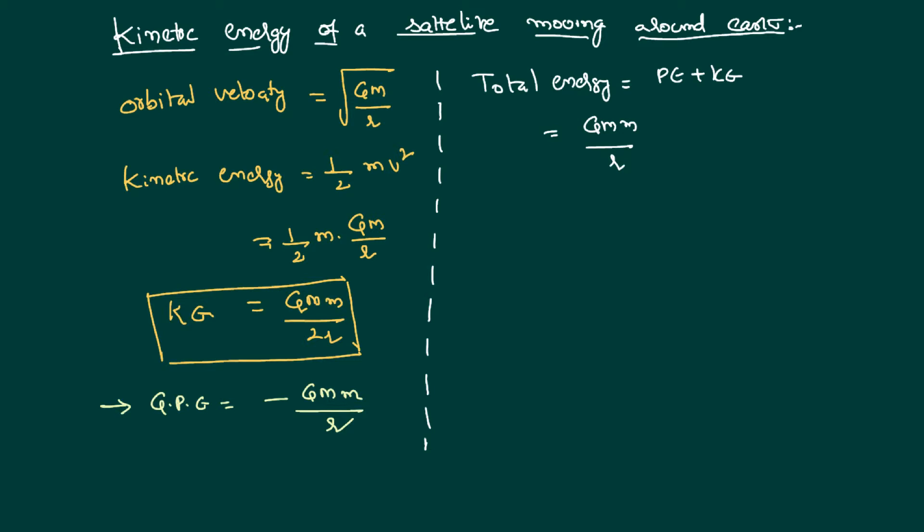For both of them, gmm by r is common. Potential energy is minus one, kinetic energy is plus half. So its value is going to be gmm by r times (minus 1 plus 1/2), which equals minus 1/2. Therefore, total energy equals minus gmm by 2r.